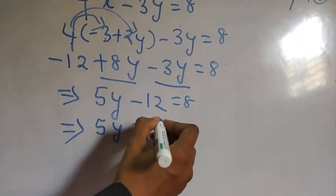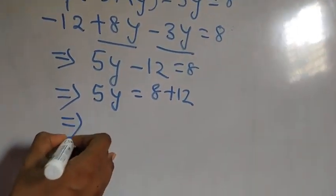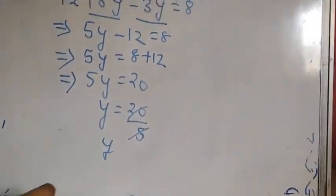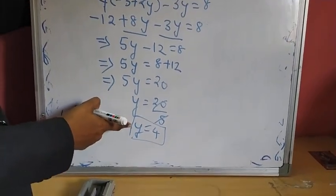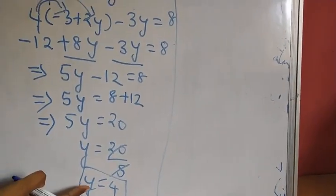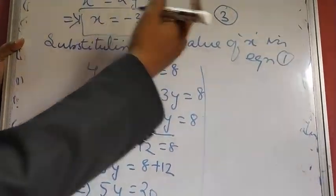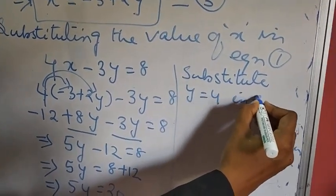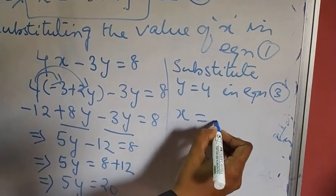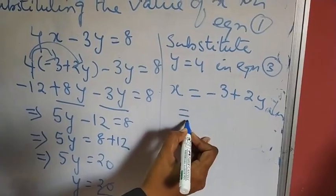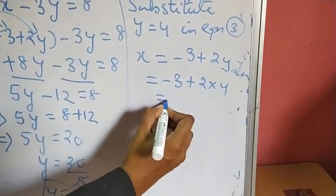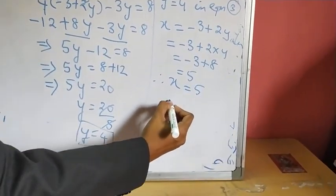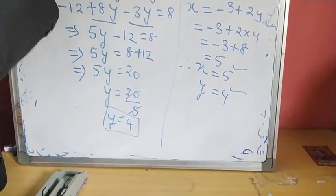Simplifying: 8Y minus 3Y gives 5Y, so 5Y minus 12 equals 8. Then 5Y equals 8 plus 12, which gives 5Y equals 20, and Y equals 20 divided by 5, so Y equals 4. Now substituting Y equals 4 into equation 3 — X equals minus 3 plus 2Y — gives minus 3 plus 2 times 4, which is minus 3 plus 8, equals 5. Therefore X equals 5 and Y equals 4.